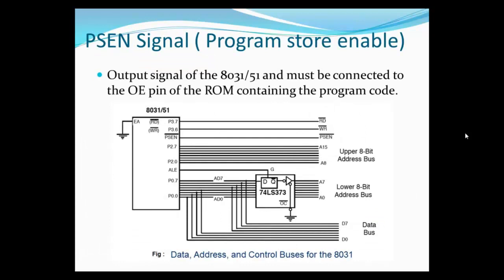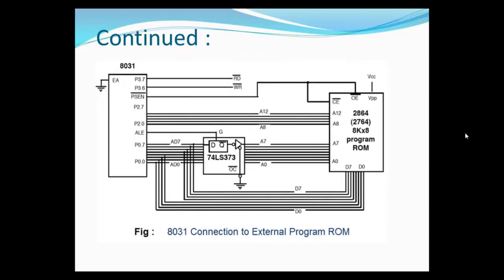Then we have the PSEN signal, called Program Store Enable. The output signal of the 8031 and 8051 must be connected to the output enable pin of the ROM containing the program code. To enable the external ROM, the output enable must be set high or low according to its manufacturing. The PSEN signal is connected to the output enable pin of the external ROM and also to the chip enable.